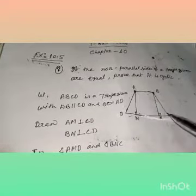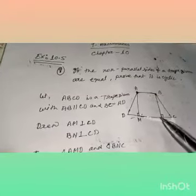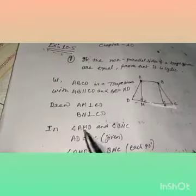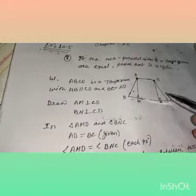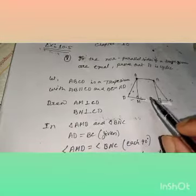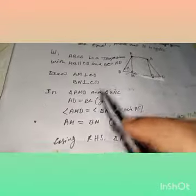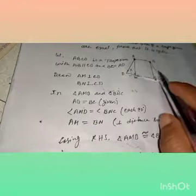Draw AM perpendicular to CD and BN perpendicular to CD — two perpendicular lines drawn from A and B to CD. Now consider triangle AMD and triangle BNC. Try to show these two triangles congruent. In triangle AMD and triangle BNC: AD is equal to BC — the two non-parallel sides are equal, as given. And angle AMD is equal to angle BNC — by construction, both are 90 degrees.